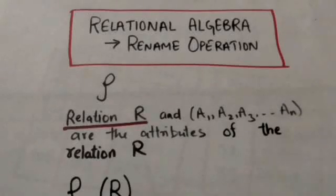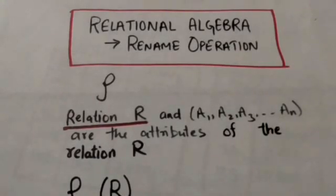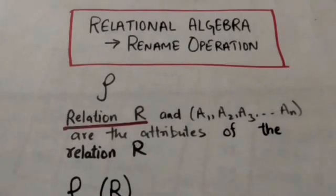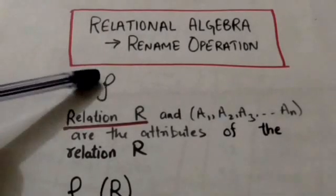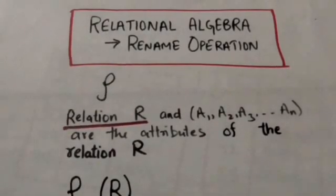Hello friends, welcome back. In this tutorial we will study about the rename operation of relational algebra. The rename operation can rename either the relation name or the attribute names or both. The symbol rho is used to denote the rename operation.